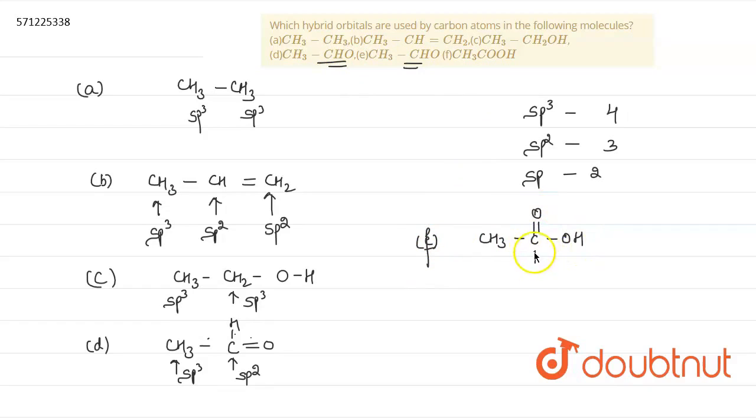In this also, this carbon is involved in three sigma bonds. That's why it will form SP2 hybridization state. And here, it will form SP3 hybridization state as the number of sigma bonds are four.